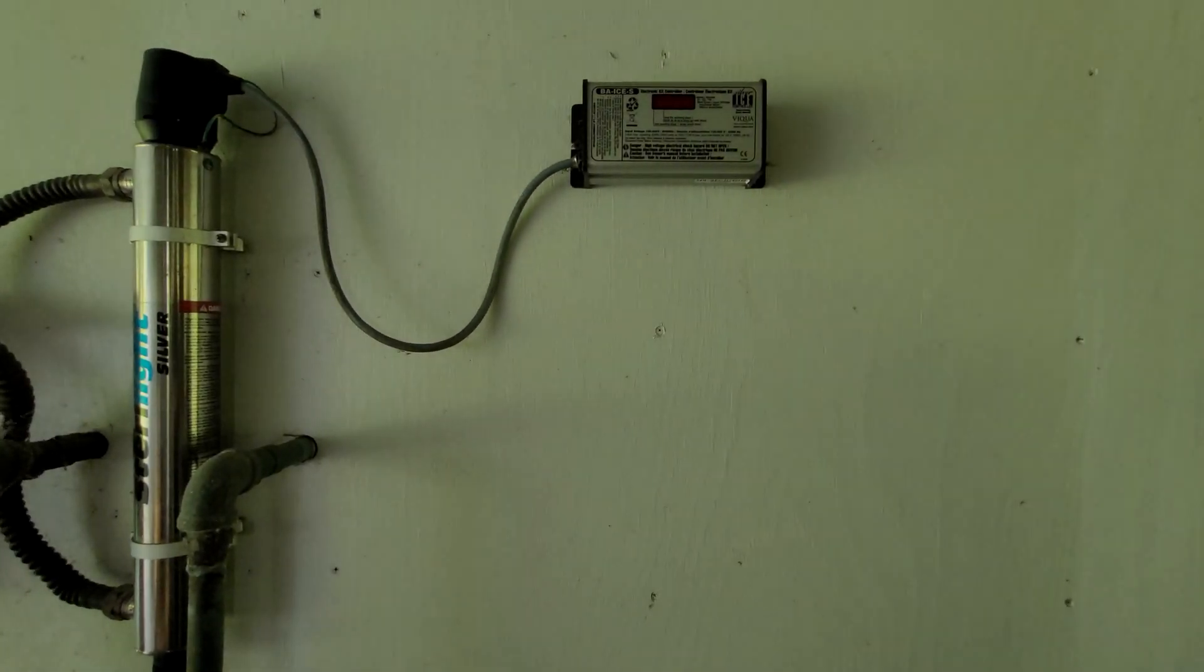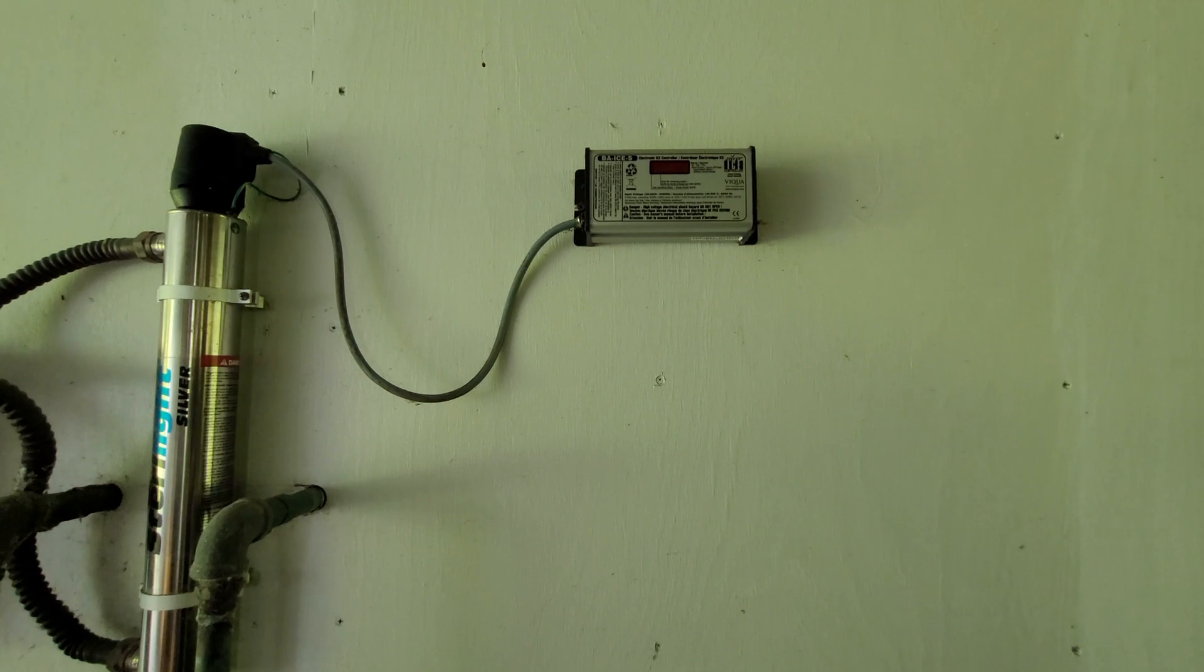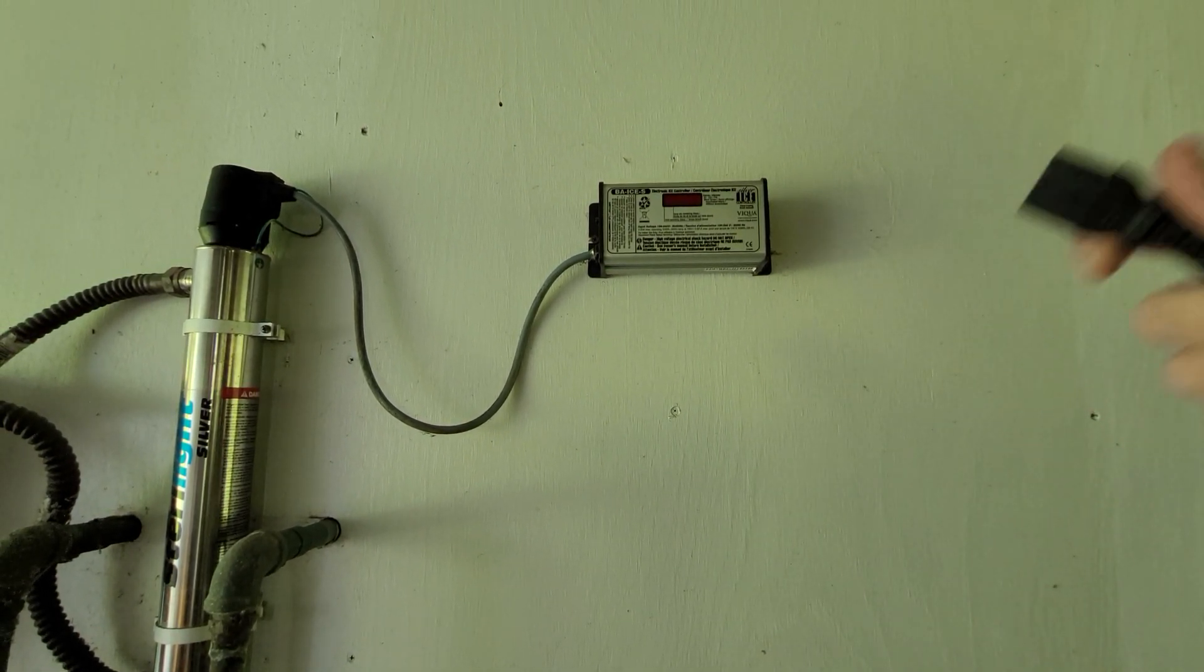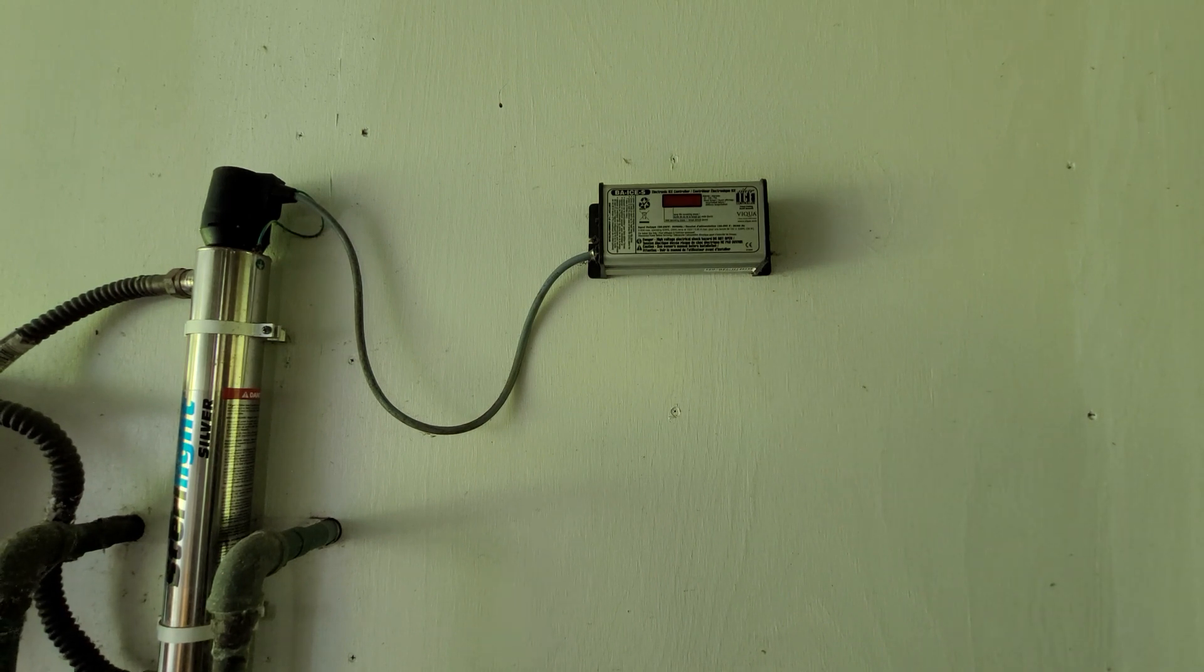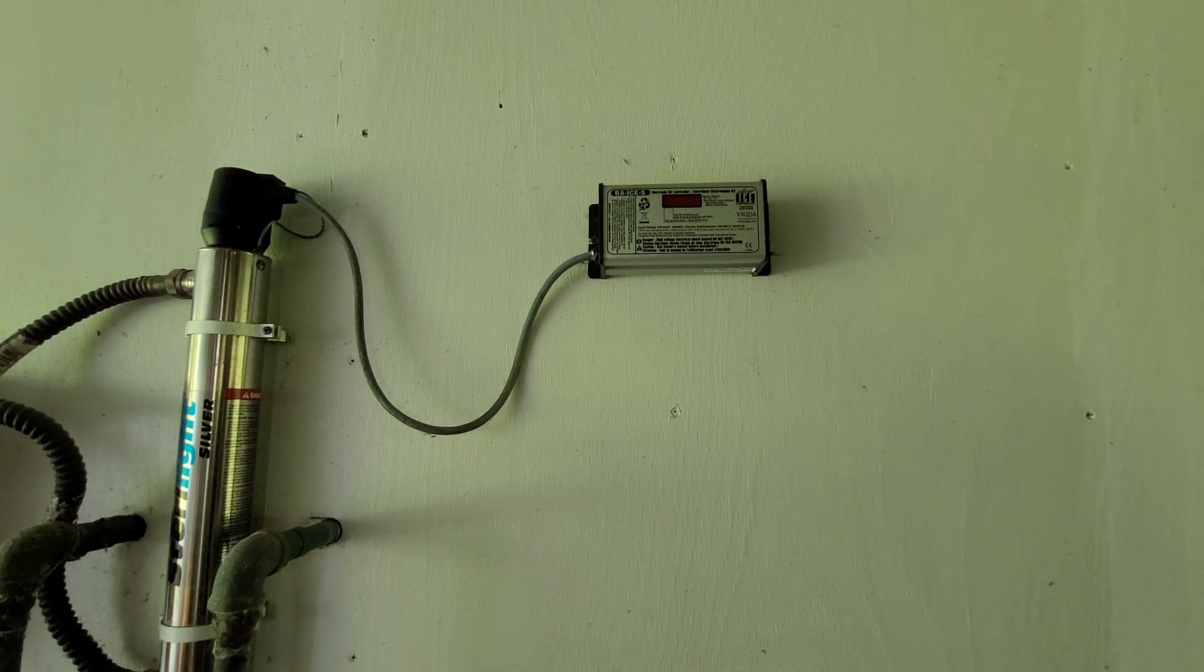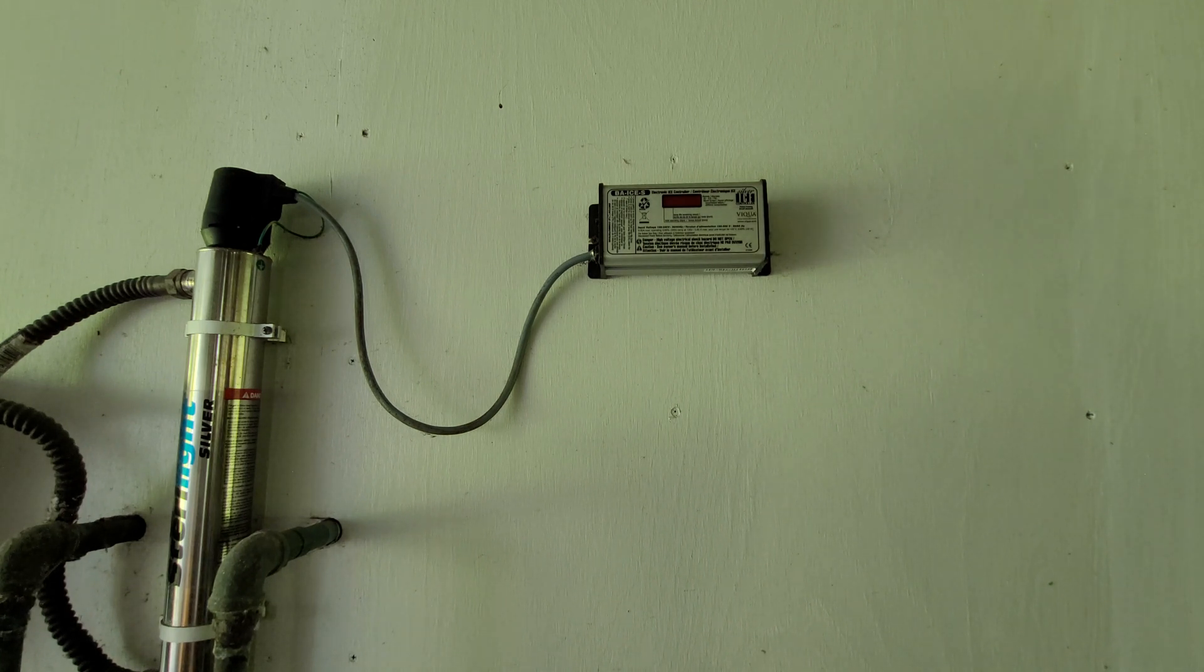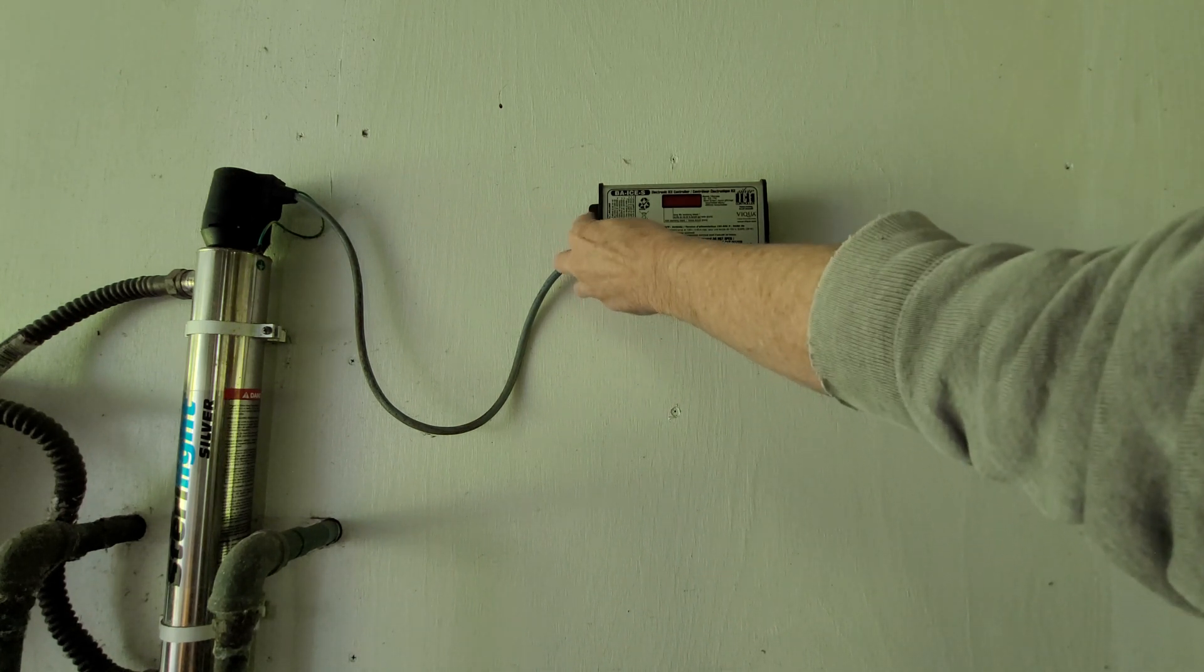For the final part which is this little control box right here. What we have to do of course is plug it back in and you think well Charles that's easy, you just plug it back in. And yes it is easy to apply power to it but we have to reset the counter on it so that it knows it's got a new bulb and it can start counting down the year for it. Because that's what we have to do with these is change them within the year. So over here on the side there's a button.